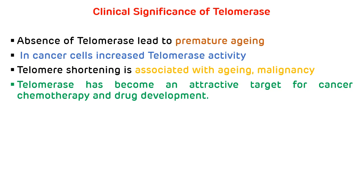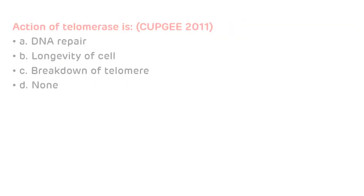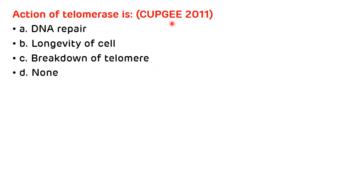Now we will look at various multiple choice questions. The first question, asked in All India 2006: 'All of the following cell types contain the enzyme telomerase which protects the length of telomeres at the end of the chromosomes, except — germinal, somatic, hemopoietic, and tumor.' As we discussed, telomerase enzyme is not present in somatic cells. So the answer is B, somatic. The third question, asked in CUPGEE 2011: 'Action of telomerase is — DNA repair, longevity of cell, breakdown of telomere, and none.' The correct answer is longevity of cell.